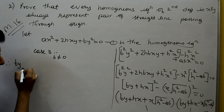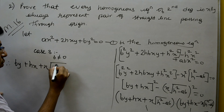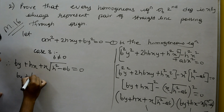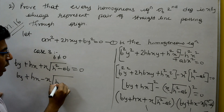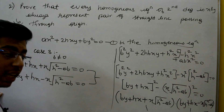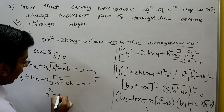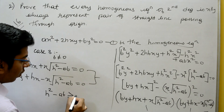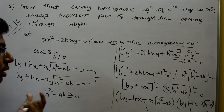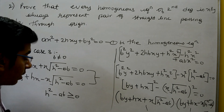Therefore, BY + HX + X√(H² − AB) = 0 and BY + HX − X√(H² − AB) = 0 are two lines passing through the origin, if and only if H² − AB ≥ 0. If H² − AB < 0, we cannot generate two real lines.